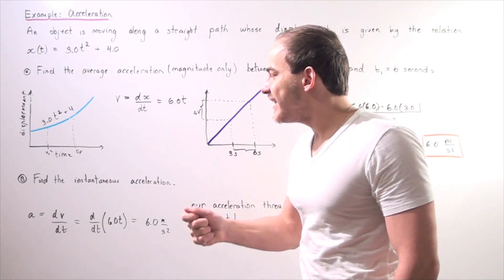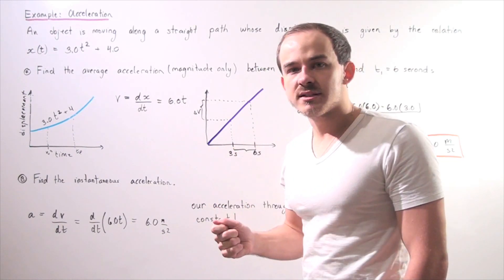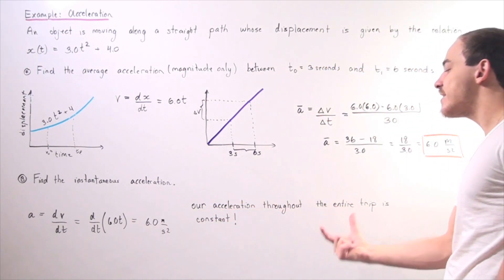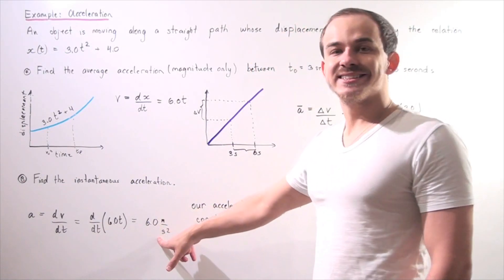So notice that our instantaneous acceleration is the same exact value regardless of our time. In other words, our acceleration throughout the entire trip is constant at 6.0 meters per second squared.